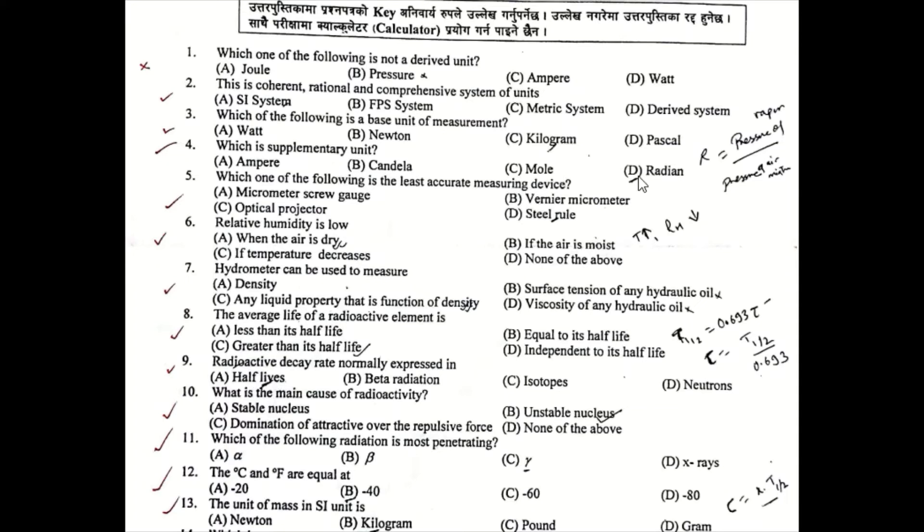Question Number 5: Which of the following is the least accurate measuring device? A) Micrometer screw gauge, B) Vernier micrometer, C) Optical projector, D) Steel rule. Question Number 6: Relative humidity is low when the air is dry.